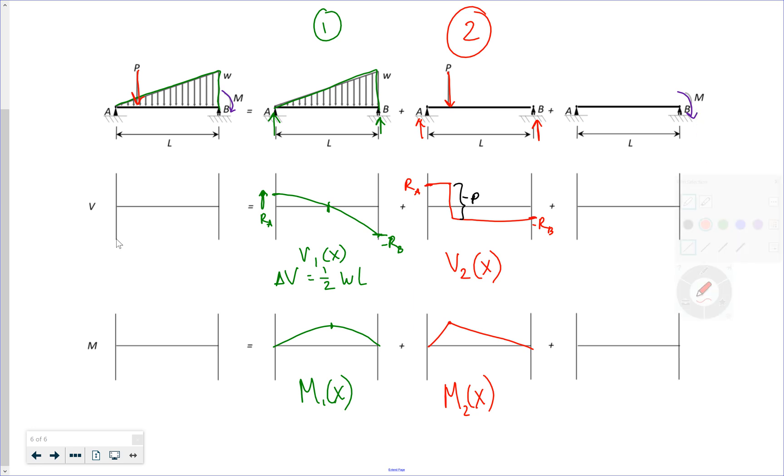My next one, I have an applied concentrated moment at B. I need to have a vertical reaction up at B as a result and a horizontal reaction down at A to have equilibrium in the Y direction. That leads to a constant shear which has a value of negative B. Number three, this is my shear function for loading three.